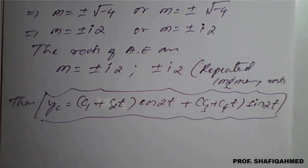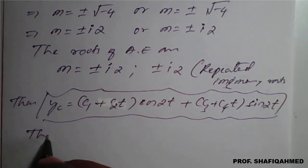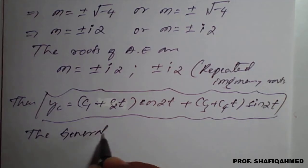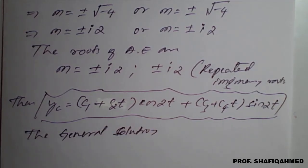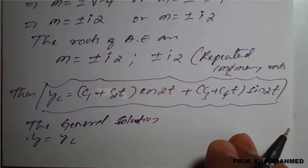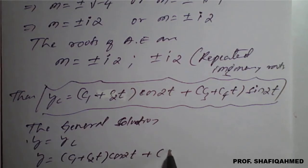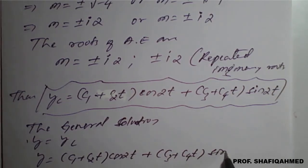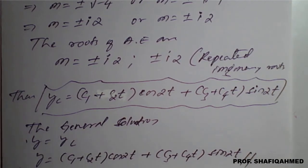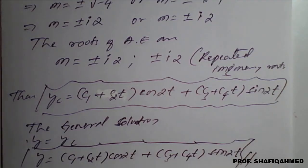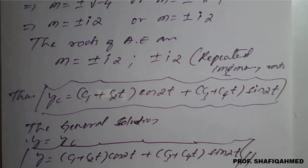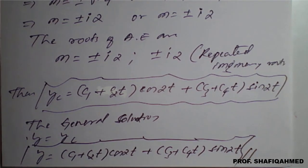With the help of this complementary function we can write the general solution. Therefore the general solution is y = (c₁ + c₂t)cos(2t) + (c₃ + c₄t)sin(2t). This is the required general solution of the given homogeneous differential equation. In this way we need to solve such examples.